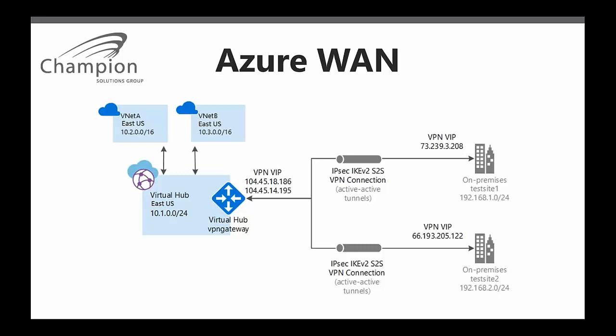The Azure Virtual WAN was in preview and is now generally available. A lot of folks are very excited about this. The Azure Virtual Wide Area Network is a new service in Azure designed to make it easier to connect your branch locations to each other and also connect them up to your resources in Azure.